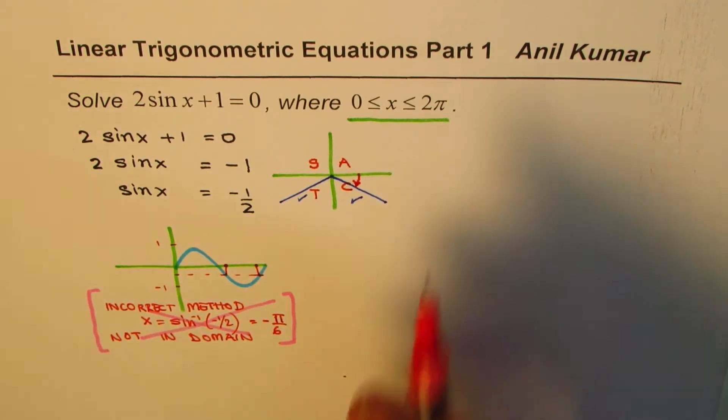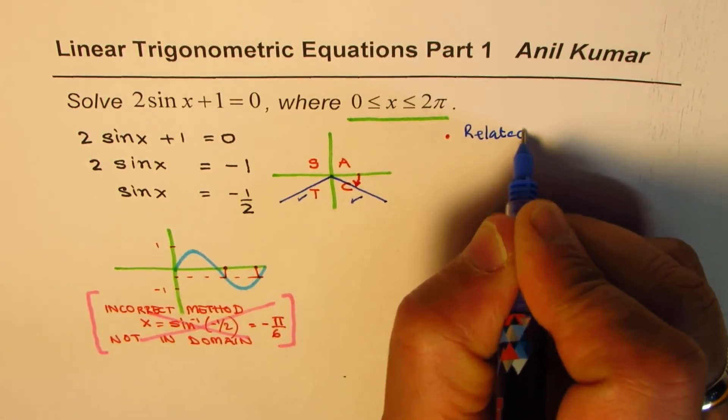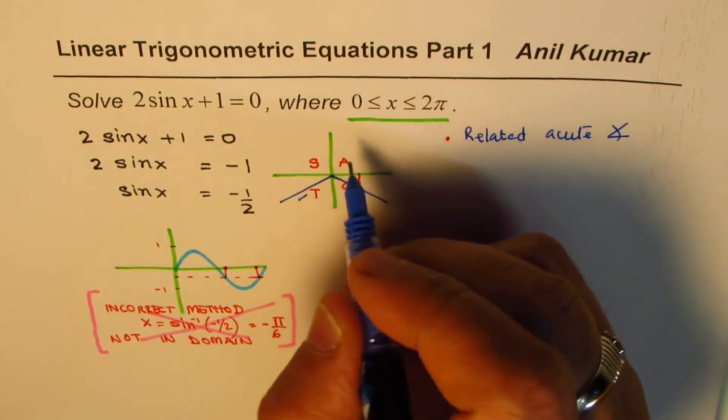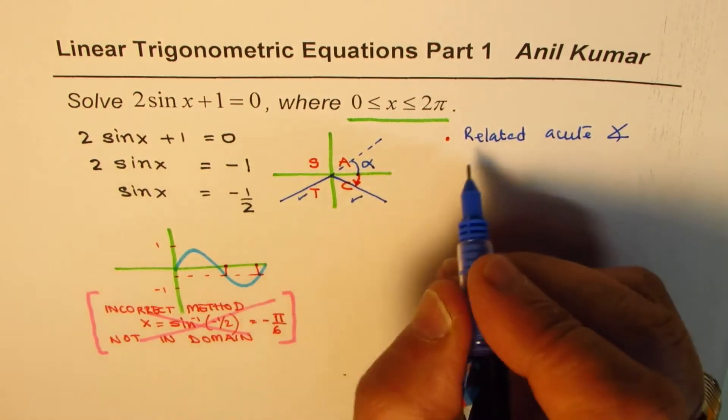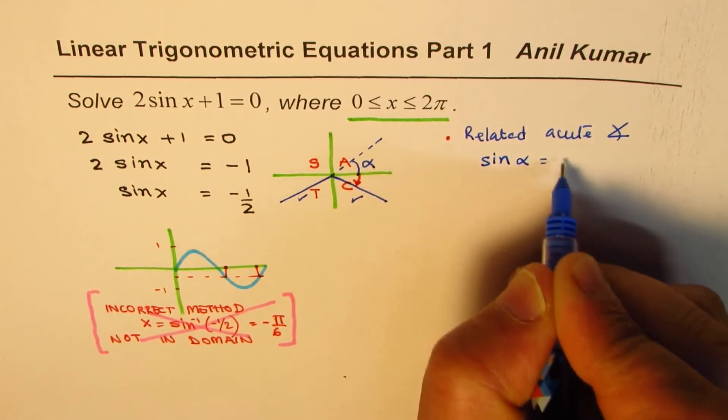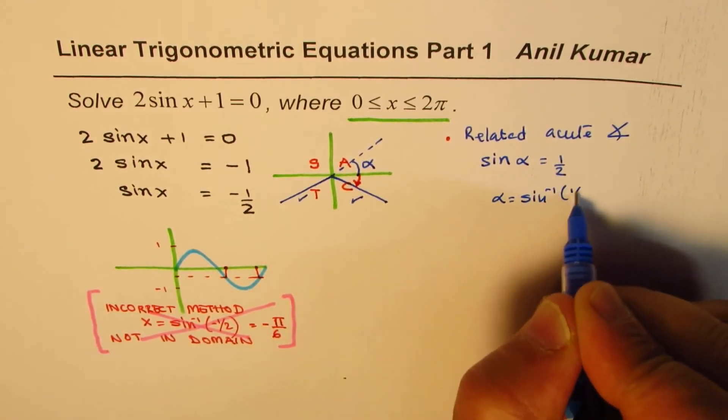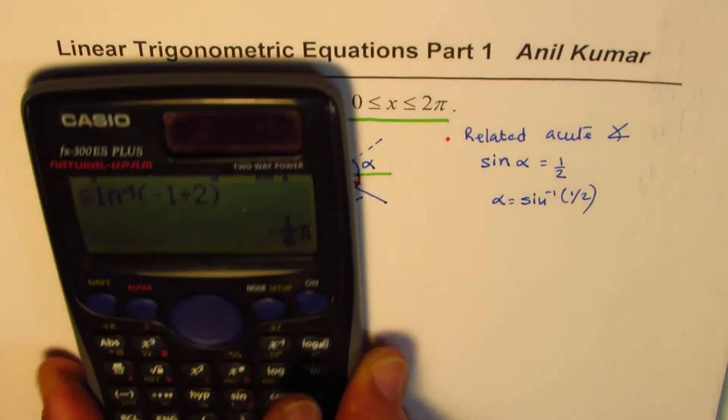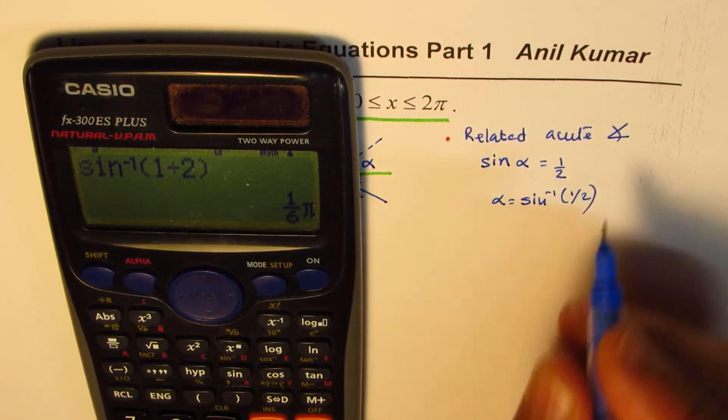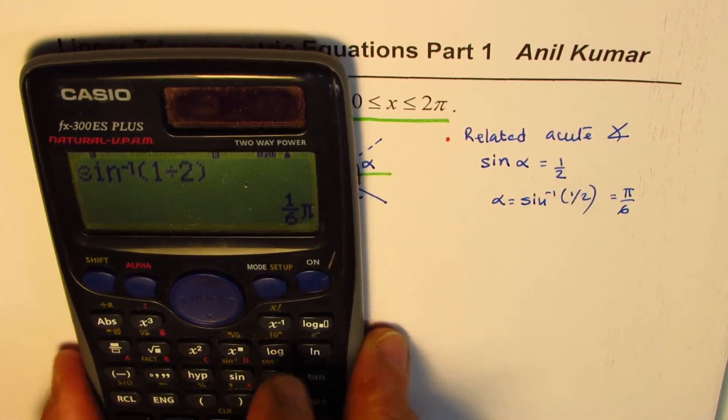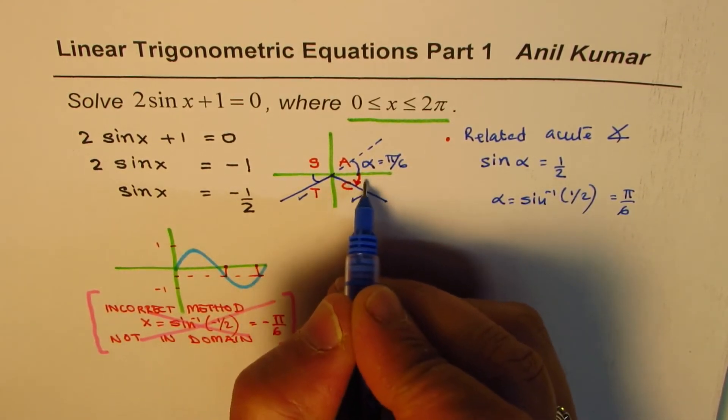The correct method is to find the related acute angle. Related acute angle is in quadrant 1. So let's call this α. So sin(α) should be positive 1/2. Since all are positive in quadrant 1, α should be sine inverse of 1/2. That is shift sine inverse of 1/2. Last time we did -1/2, this time we are doing +1/2. Now we get α as π/6. So π/6 is the related acute angle.